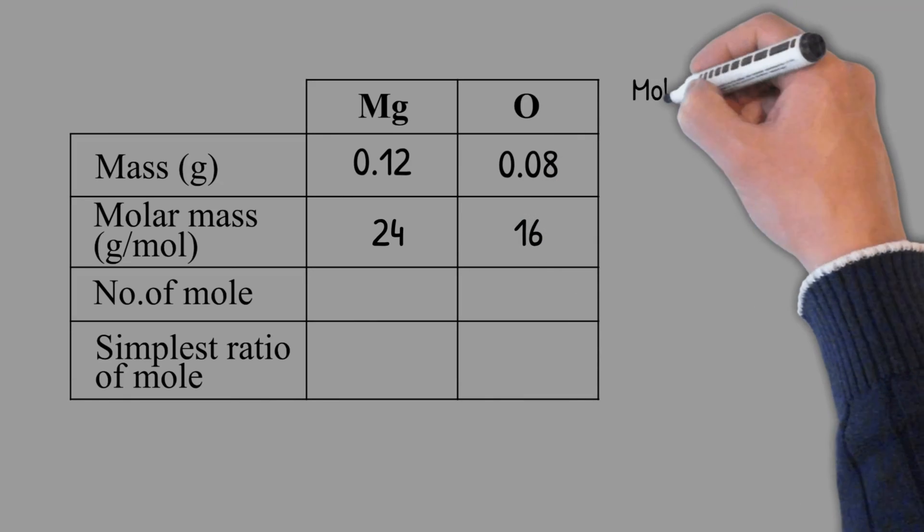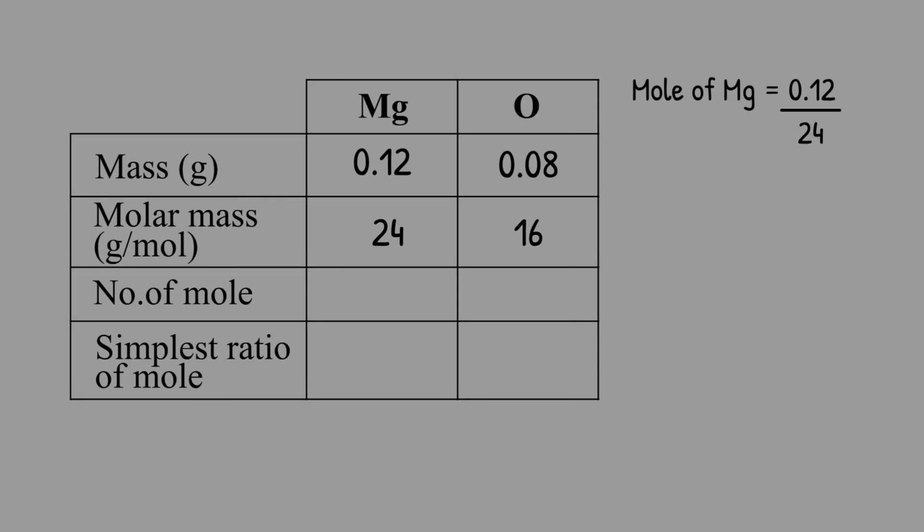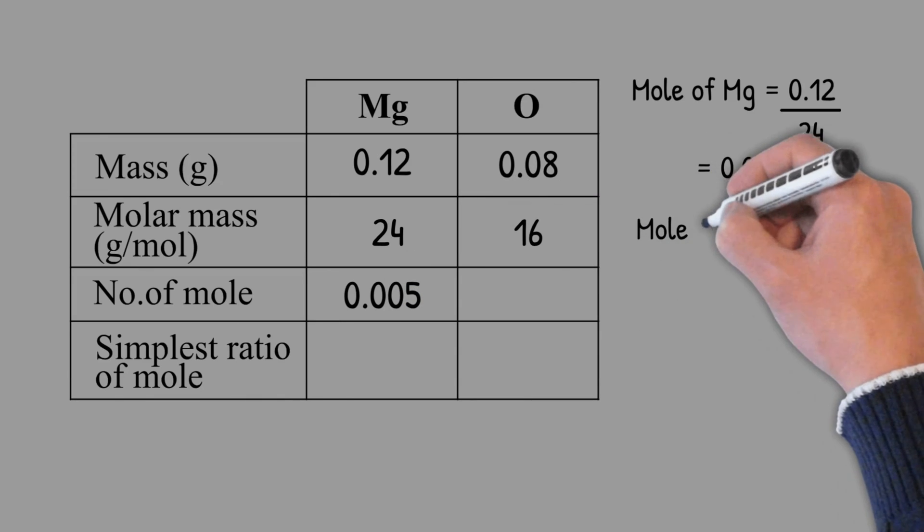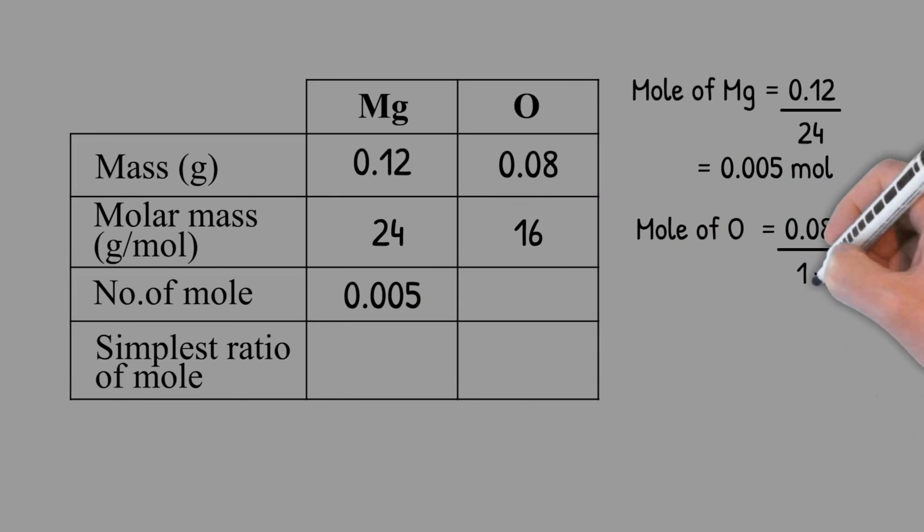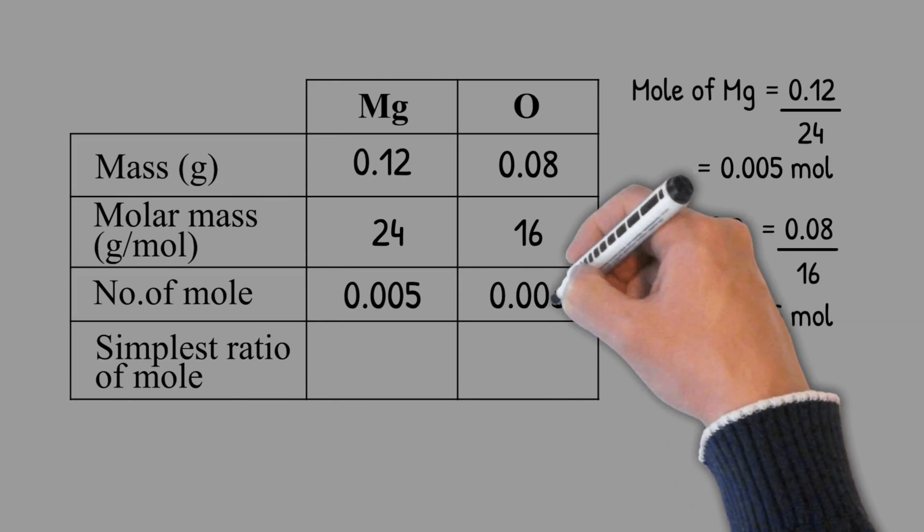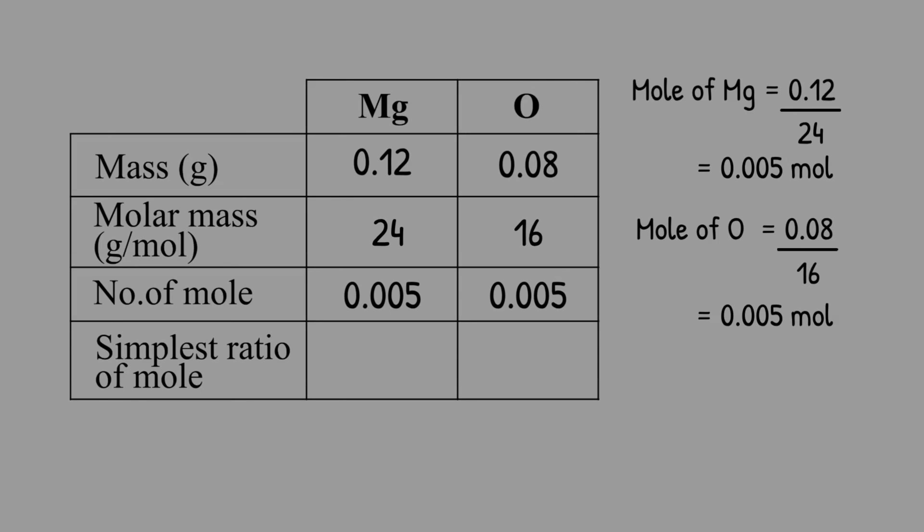The number of moles of magnesium is 0.12 grams divided by 24, which is 0.005 mole. The number of moles of oxygen is 0.08 grams divided by 16, which is 0.005 mole.